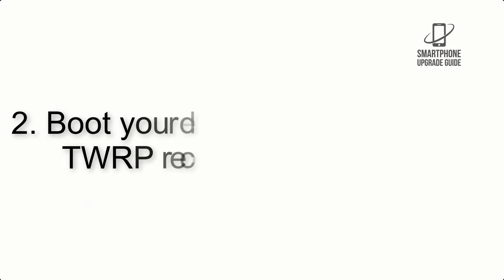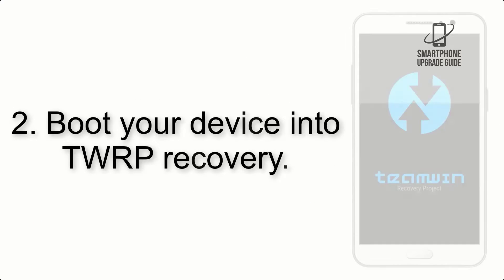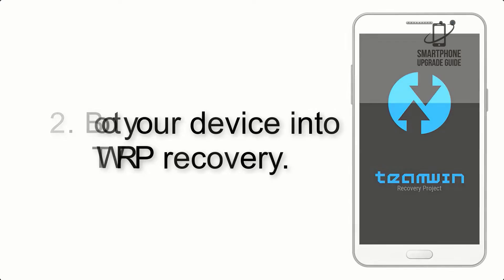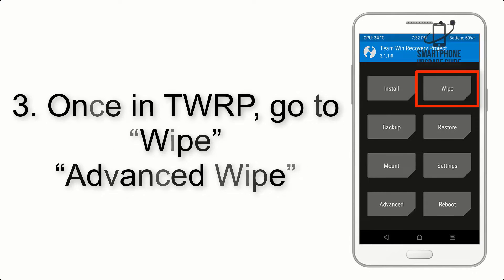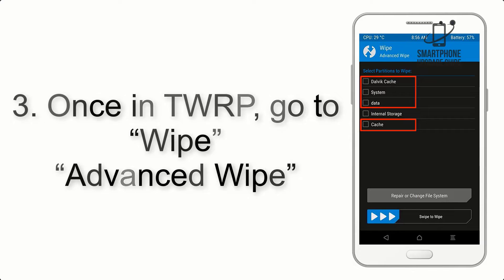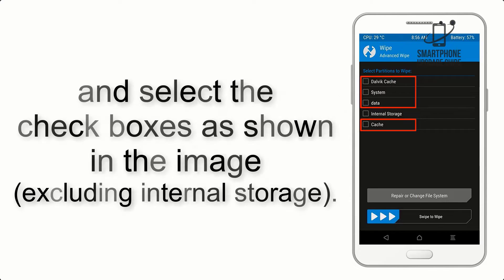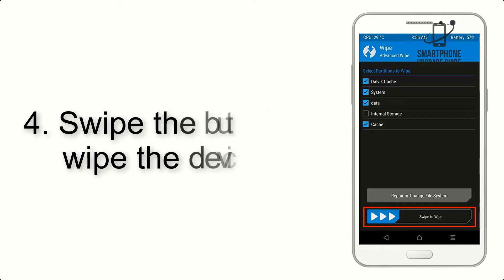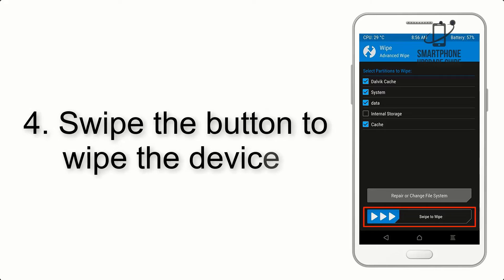Step 2: Boot your device into TWRP recovery. Once in TWRP, click on Wipe, then Advanced Wipe, and select the checkboxes as shown in the image, excluding internal storage.